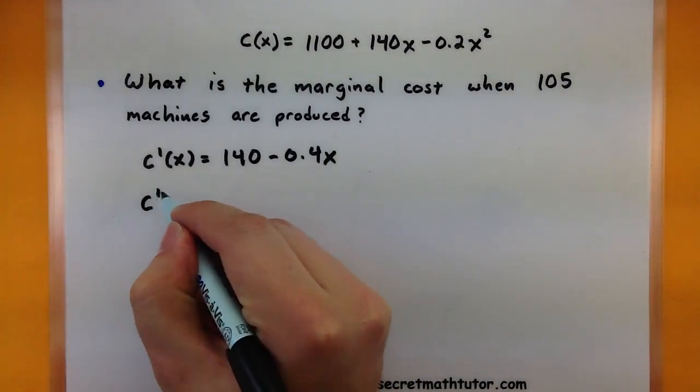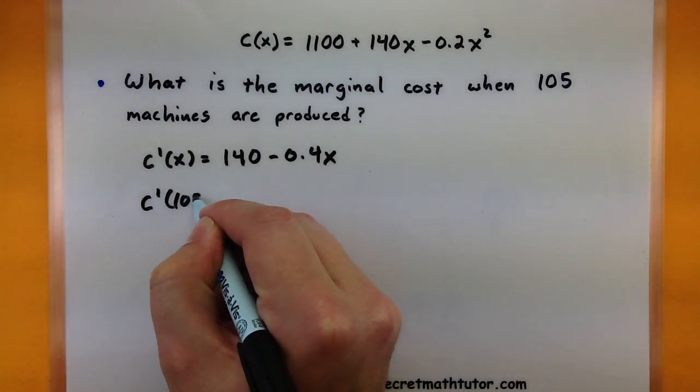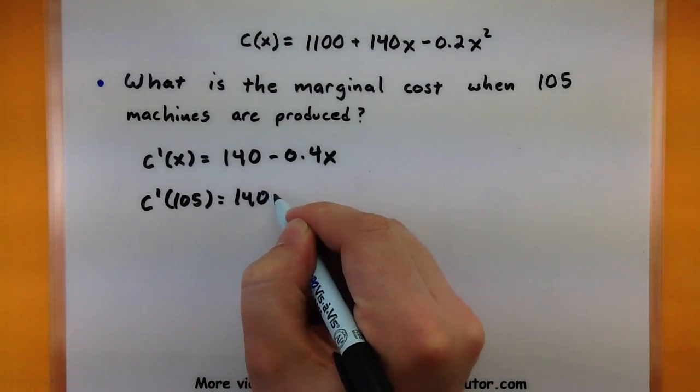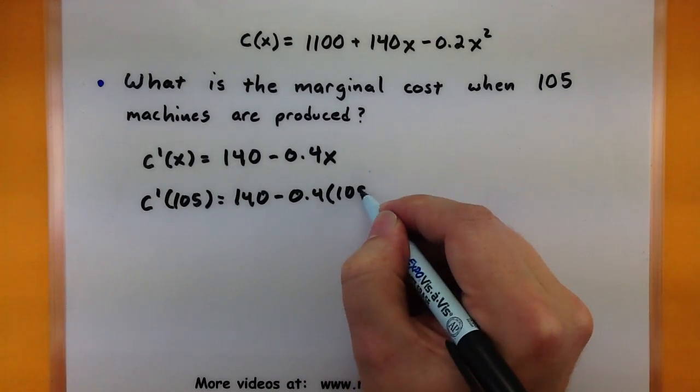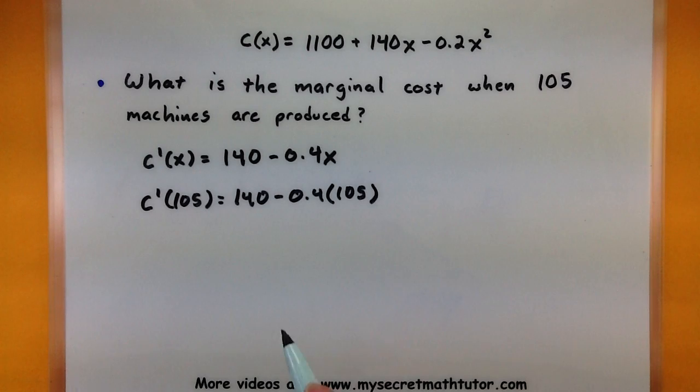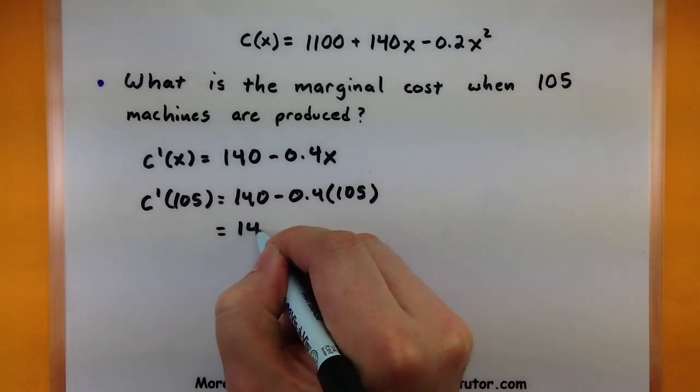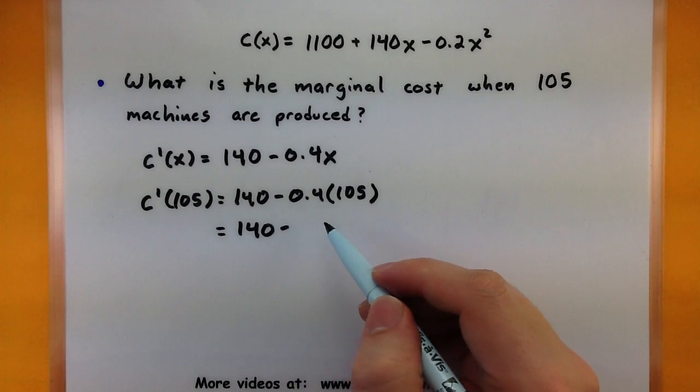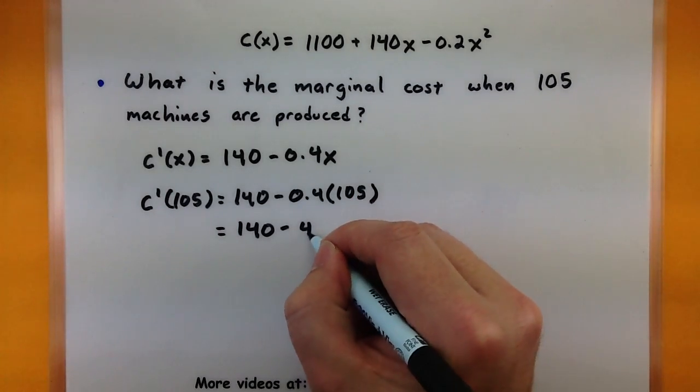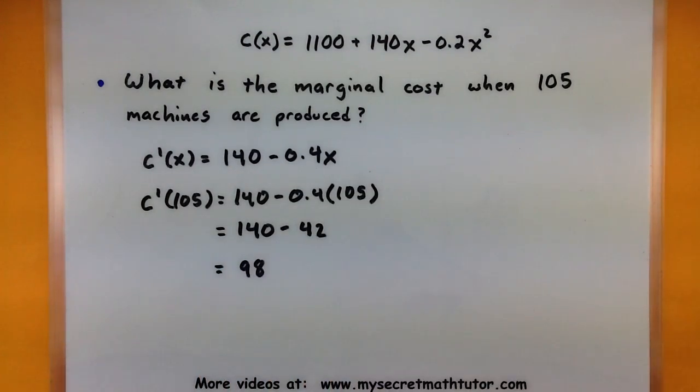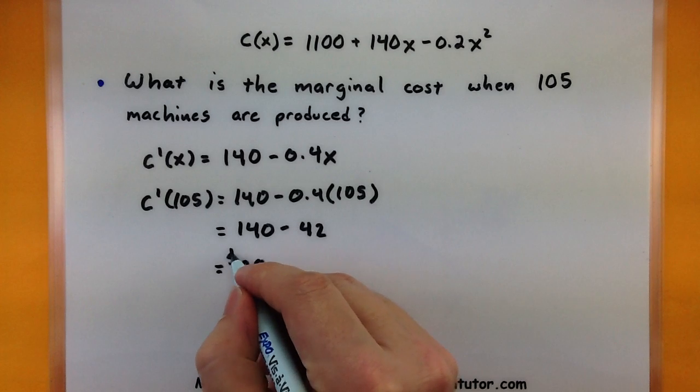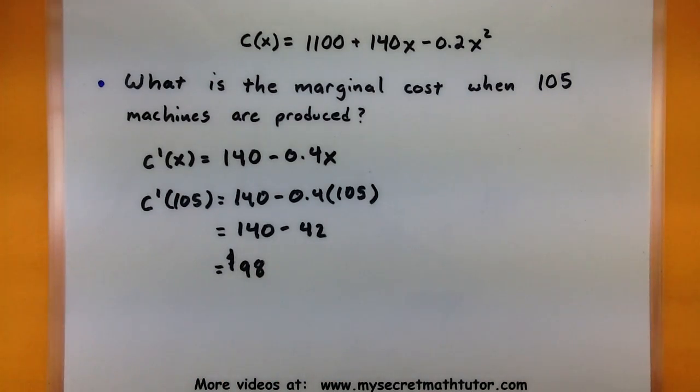Now to get the marginal cost for 105 machines, we'll plug in that 105. So 140 minus 0.4 times 105. Now let's go ahead and simplify this down. So 140 minus 0.4 times 105, that's just 42. So 140 minus 42 is 98, or in the context of our problem we could say 98 dollars is the marginal cost when 105 machines are produced. Now keep this number in mind as we get to the next half.